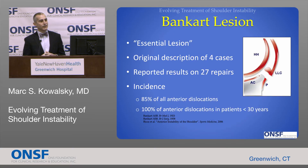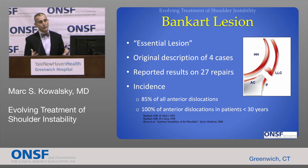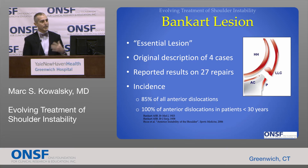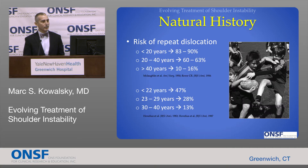When somebody does dislocate, there's a very characteristic injury pattern that occurs. The fundamental injury is the tear of the labrum from the rim of the socket, which causes you to lose your bumper but also lose the connection of the glenohumeral ligaments. This was first described by Dr. Bankart based on a very small number of patients that he identified, repaired, and reported. But we've come to learn that these labrum tears occur in almost every shoulder dislocation, particularly in our younger patients.